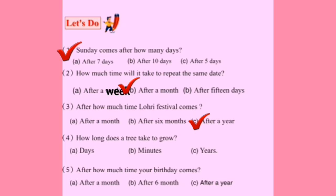Sum number four: How long does a tree take to grow? A. Days. B. Minutes. C. Years. Dear students, a tree takes many years to grow. We will tick on option C — years.